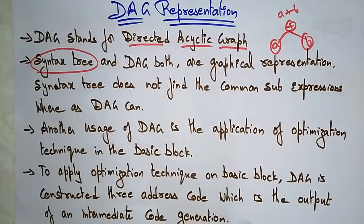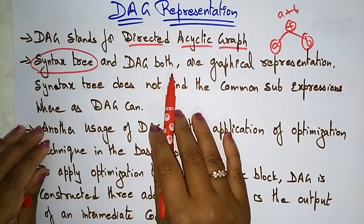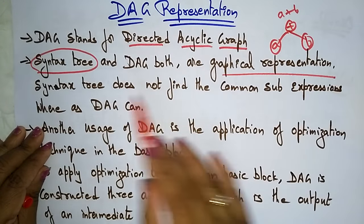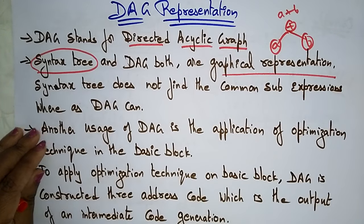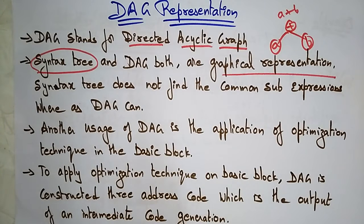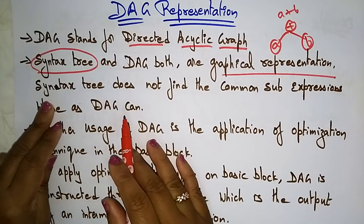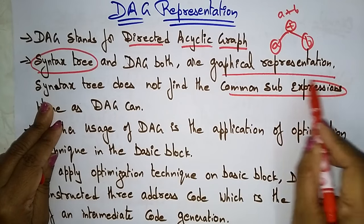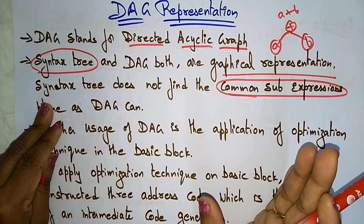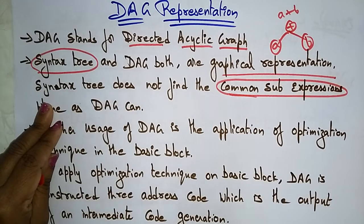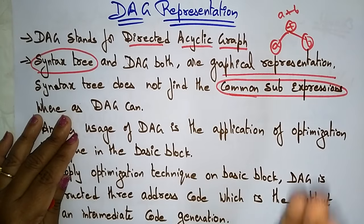So what is the main difference between the DAG and the syntax tree? Both are graphical representations, but the syntax tree does not find common sub-expressions, whereas the DAG can find common sub-expressions. The syntax tree cannot identify common sub-expressions present in a given grammar, whereas the DAG can find them and reduce the size of the tree.